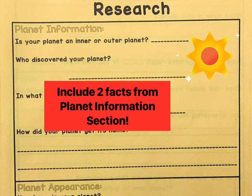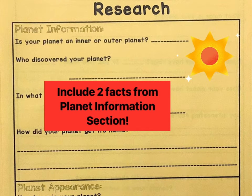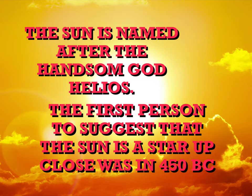After your opening slide, you're going to include two facts about your planet from the planet information section. You can choose to include more, but I'm only requiring two facts. For example: the sun is named after the handsome god Helios, and the first person to suggest the sun is a star up close was in 450 BC.